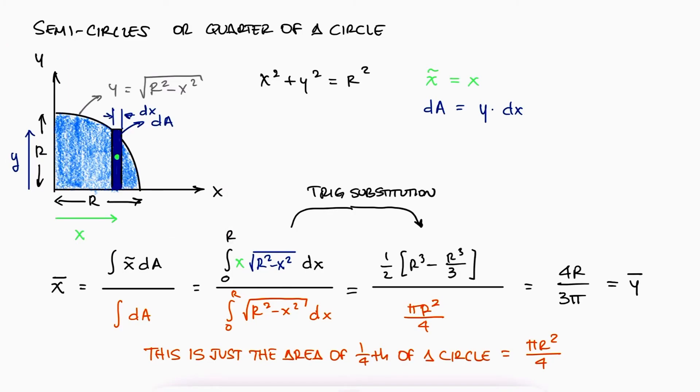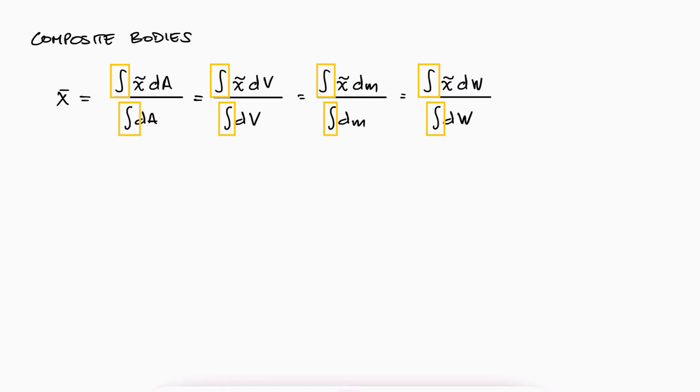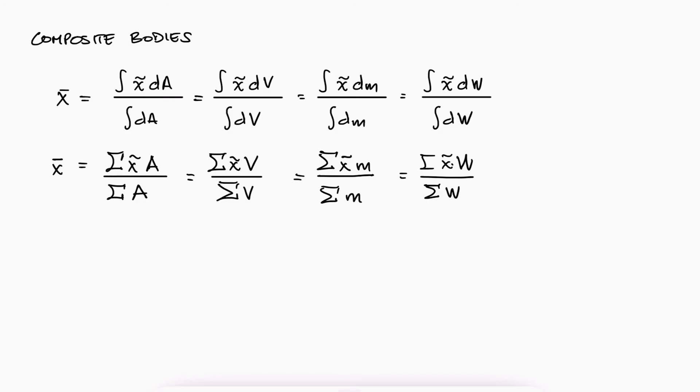Now, what about more complex shapes that can be constructed from putting simple shapes together? All the main expressions we developed in terms of integrals can be used here, but instead of adding up an infinite number of differential weights, masses, volumes, and areas, which is what the integral is effectively doing, we can instead have a finite number of weights, masses, volumes, or areas. And that's why we write them as a sum instead of an integral.